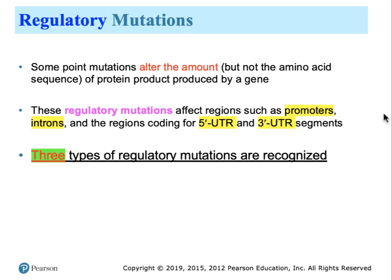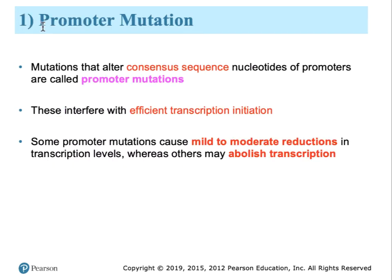As alluded to earlier, mutations could affect the regulatory components of a gene. If the mutation is localized to the promoter, the introns, the 5' or 3' untranslated regions, then there may be a change in the amount of gene product rather than its complete absence. Three types of regulatory mutations are recognized. The first is a promoter mutation — promoter mutations may knock out the consensus sequence, making it less effective and in a few cases more effective, interfering with initiation of transcription. Depending on the position of the mutation, the product may be completely missing, have no effect, or something in between.